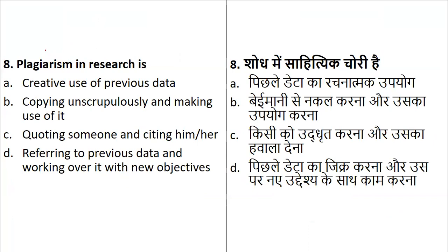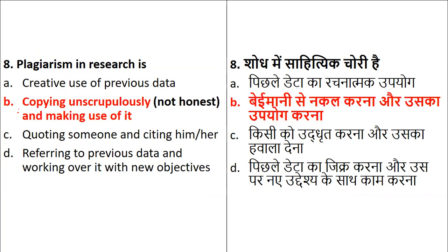Coming to the next question: plagiarism. This is where you do not give any credit to the actual author or research scholar and try to prove it as your own research. Is plagiarism the creative use of previous data, copying it spuriously and making use of it, quoting someone and citing them, or referring to previous data and working on it with new objectives? Plagiarism is basically copying — you are not honest and you make use of someone else's research work, which is completely wrong and unethical.